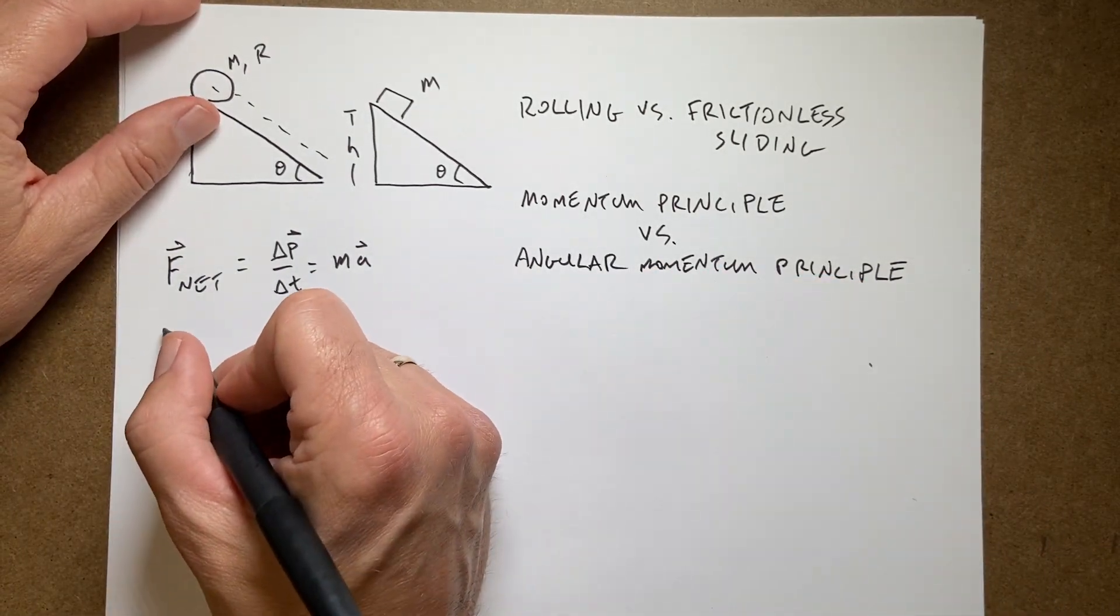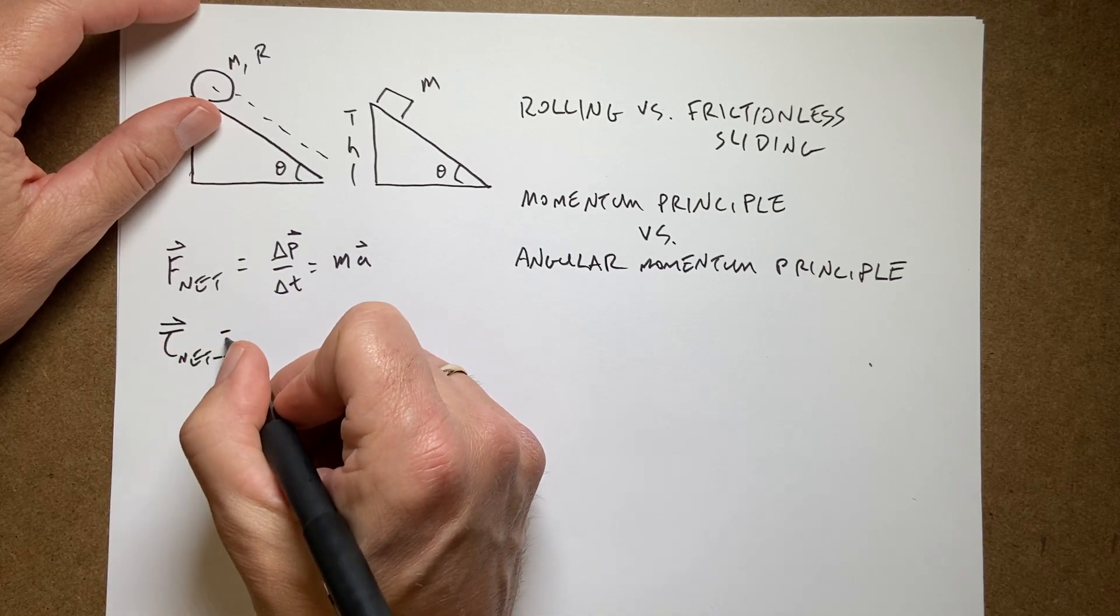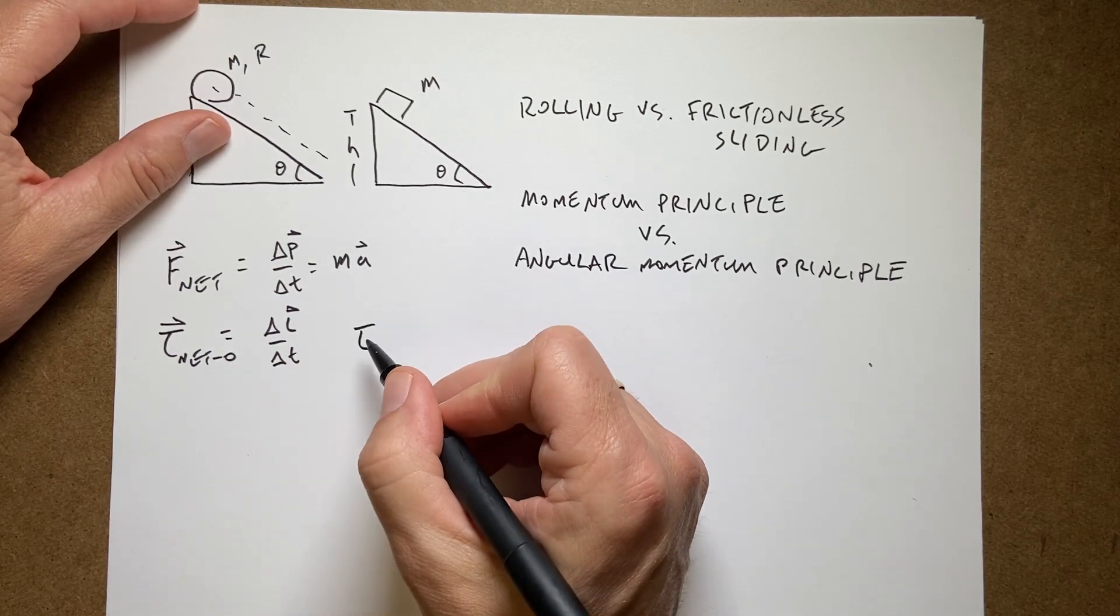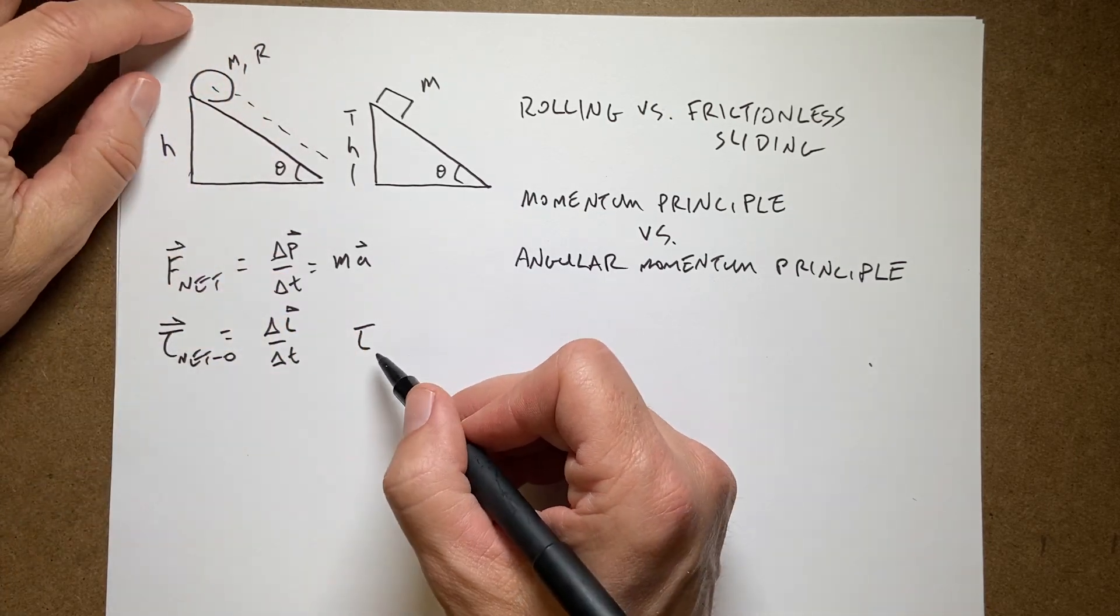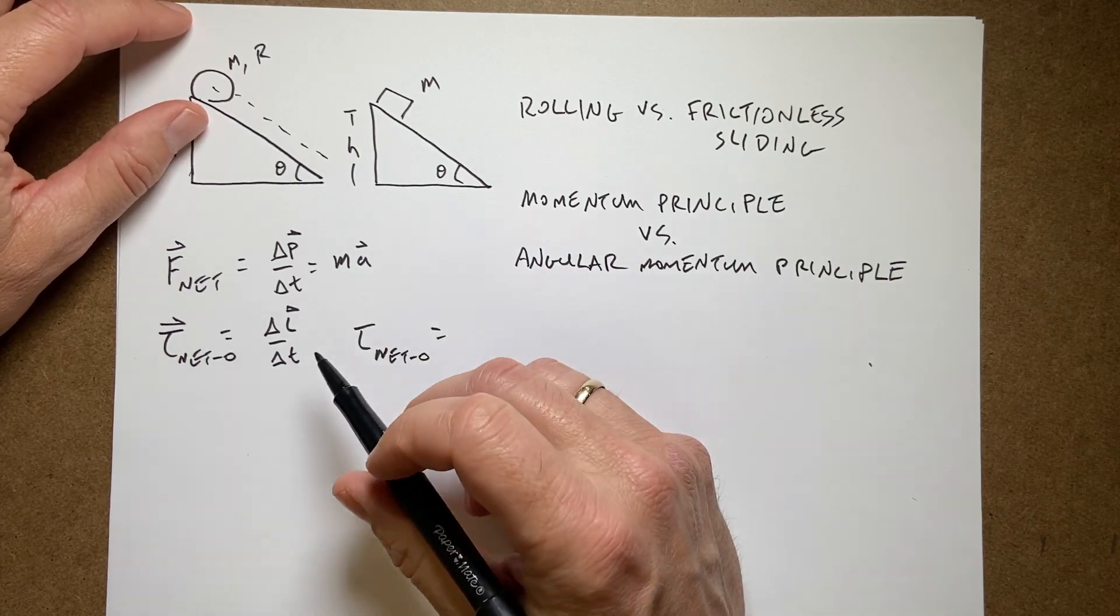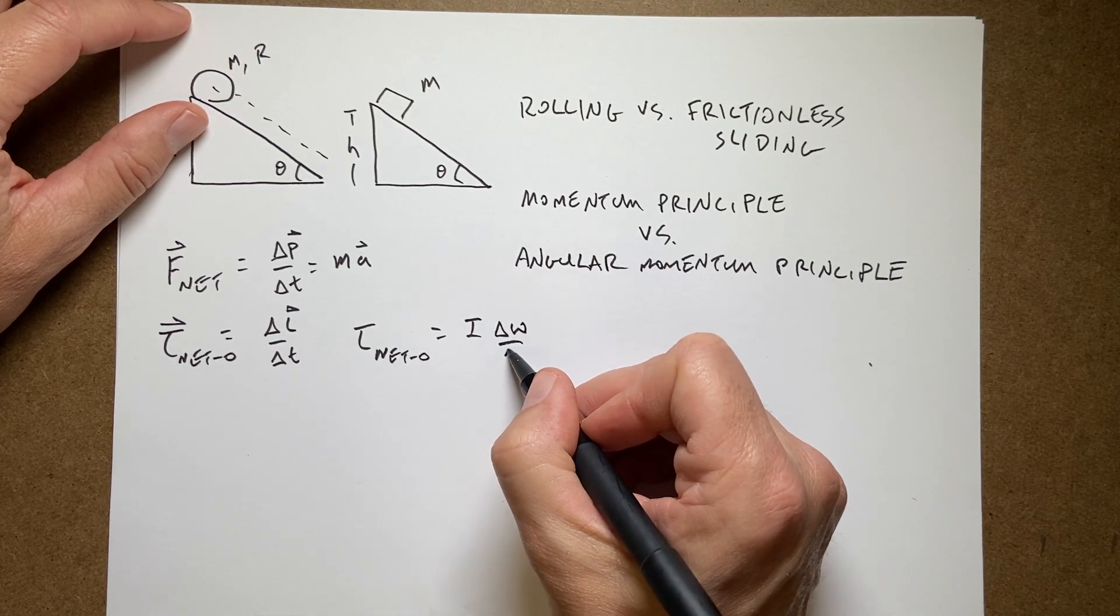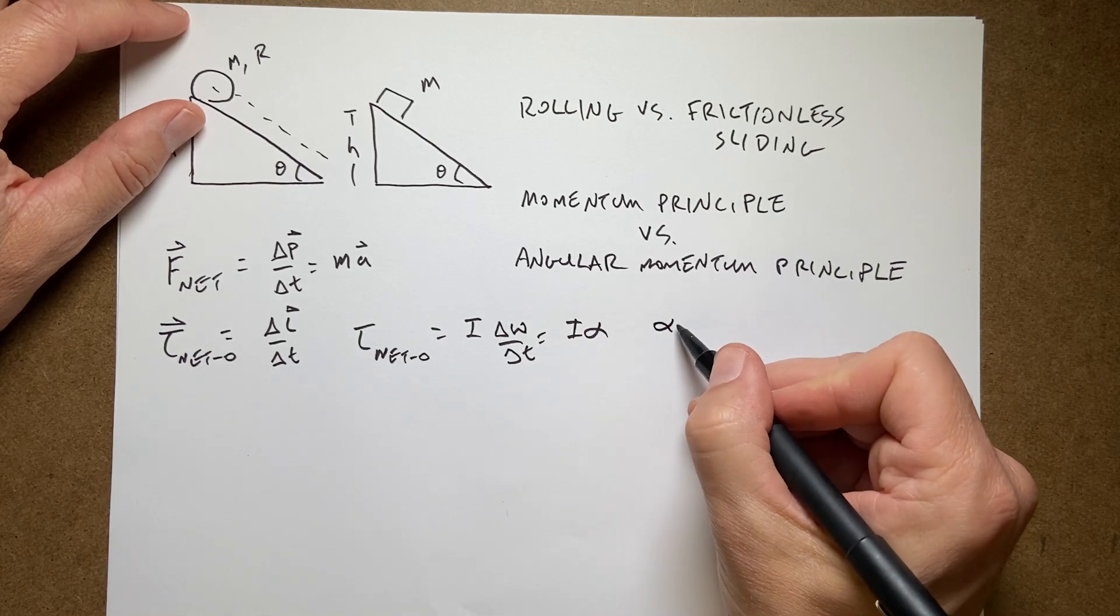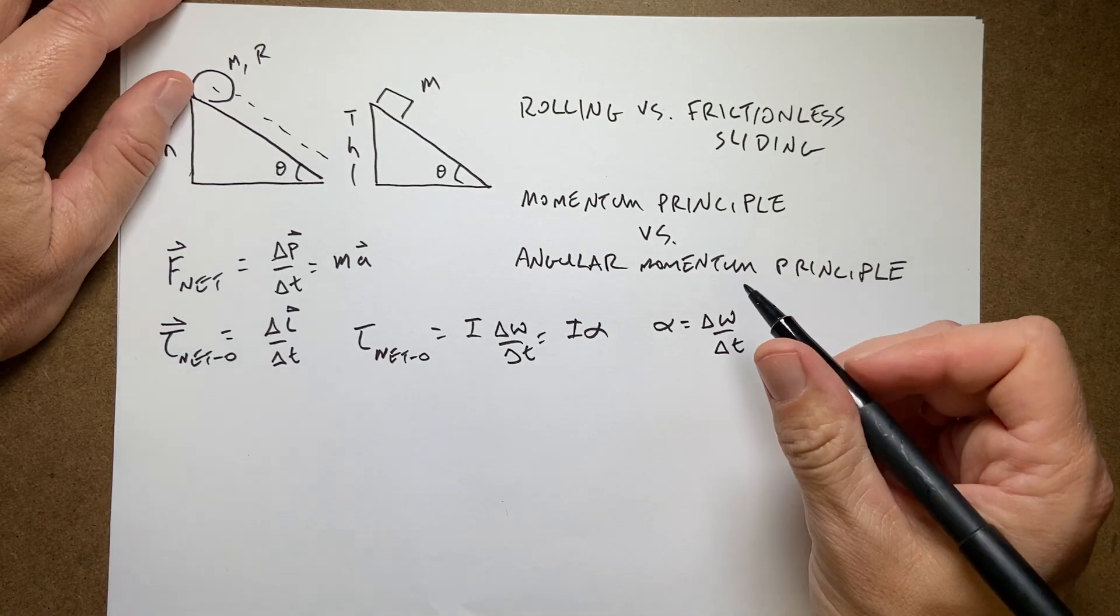And then the angular momentum principle: torque net about some point O is equal to the change in angular momentum over the change in time. So in one dimension, if I consider this fixed in the plane so it can't do weird stuff, the net torque about some point O is going to be I delta omega delta t, which is I alpha, where alpha is the angular acceleration delta omega over delta t.